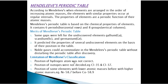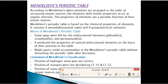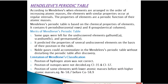The third scientist was Mendeleev. According to Mendeleev's periodic table, when elements were arranged in order of increasing atomic masses, elements with similar properties occur at regular intervals. This gave rise to Mendeleev's Periodic Law: the properties of elements are a periodic function of their atomic masses.